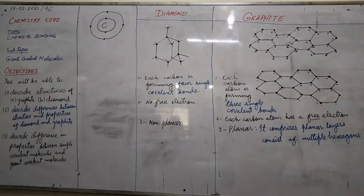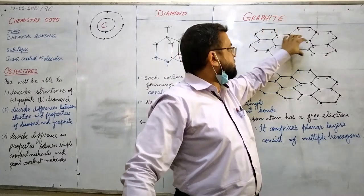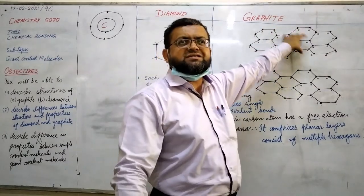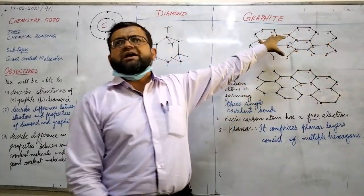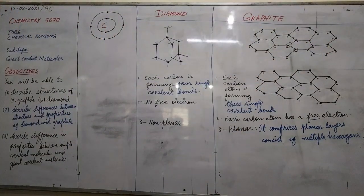It comprises multiple hexagons. One layer consists of multiple hexagons. One hexagon, two hexagons, three hexagons, four, five, six, seven, eight - I have shown only eight hexagons in one layer, but there are several.